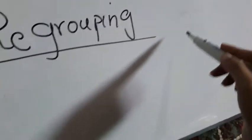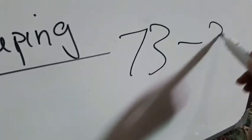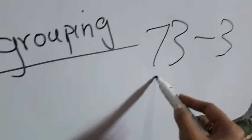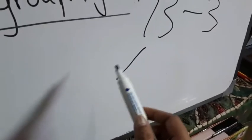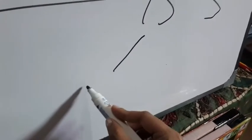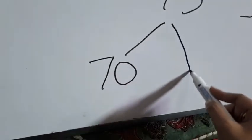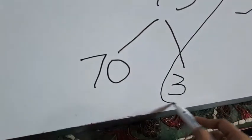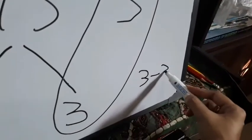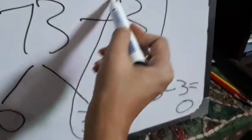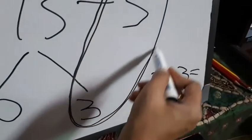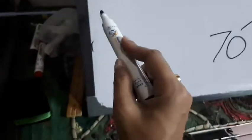Now let's learn the second method. 73 minus 3 — how many tens? Seven tens, seventy. How many ones? Three ones. We will subtract: three minus three equals zero. Write seventy here.